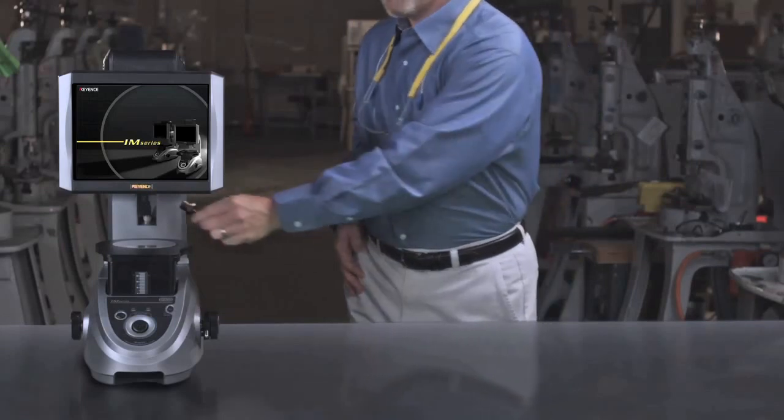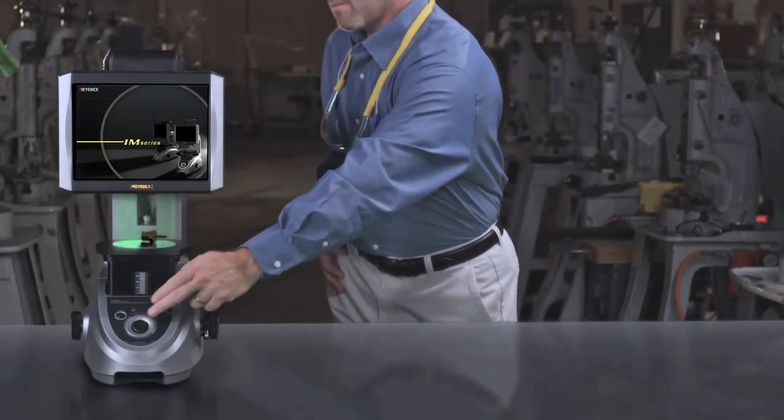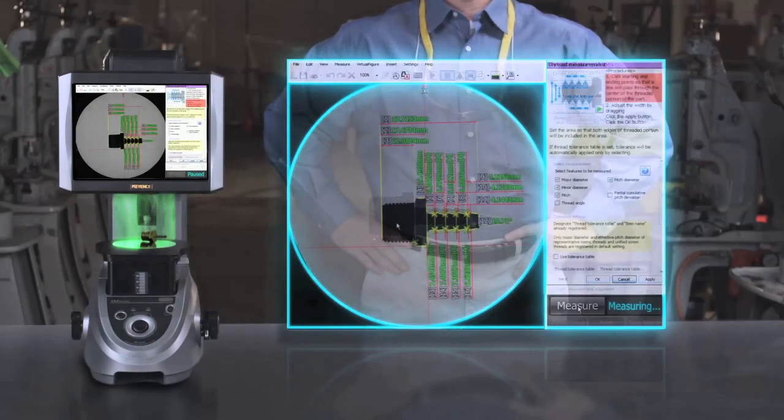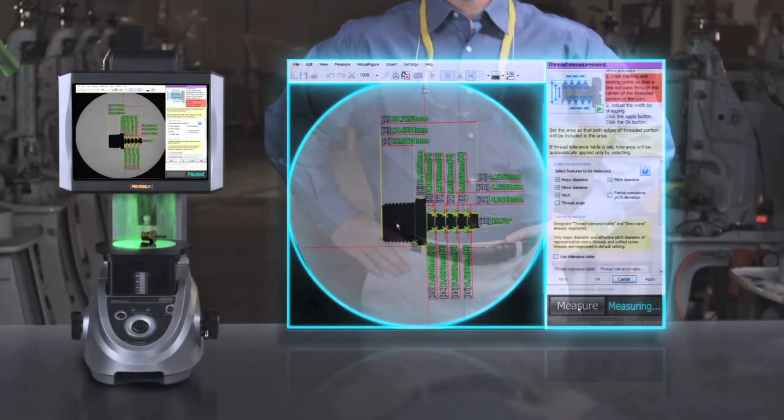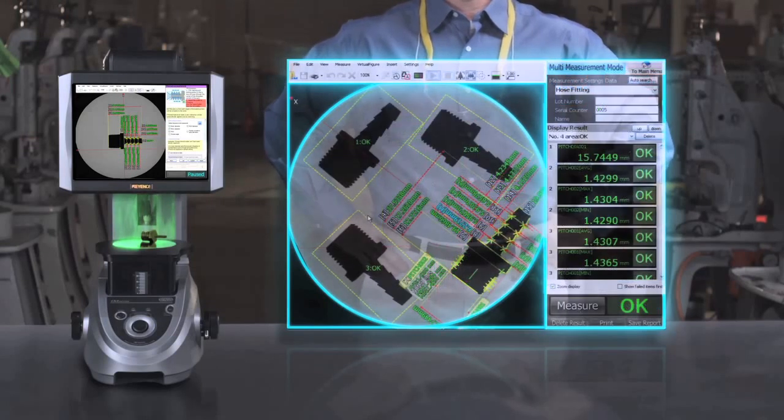Let's take this threaded part, place it on the stage, press the button, and in 3 seconds up to 99 different dimensions can be measured, verified, and reported. And I can measure one part or several with the same level of precision.